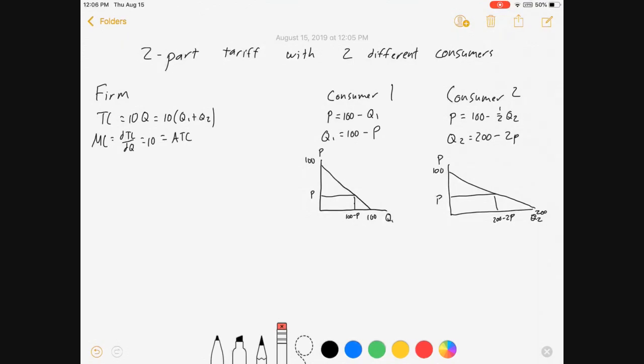Here's our setup: we've got a firm with a constant marginal cost of 10, which means its average total cost is also 10. We've got these two consumers. Consumer 1 has a demand curve Q = 100 - P, and consumer 2 has a demand curve Q = 200 - 2P, and there's their graphs.